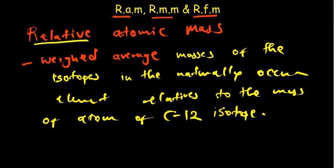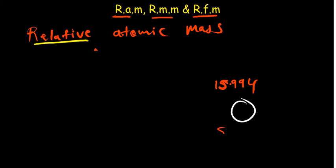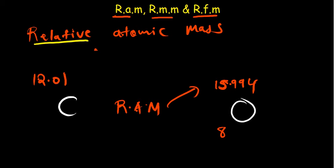Without complicating things further, when you look at the periodic table and find oxygen, for example, on top you will see 15.994 — on some periodic tables you may see 16 — and on the bottom you have 8. That value on top is what we call the relative atomic mass. Similarly, if you look at carbon, it is 12.01 with an atomic number of 6. That is the relative atomic mass of carbon.